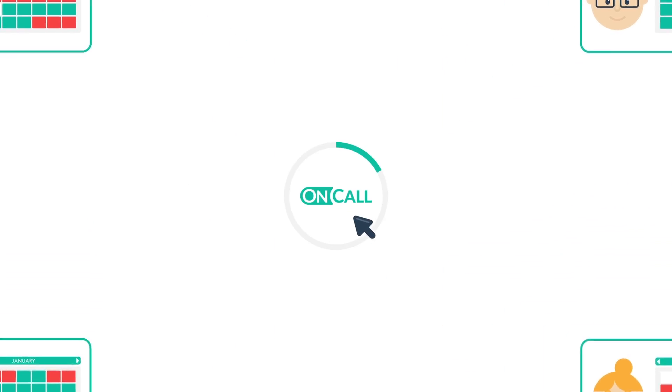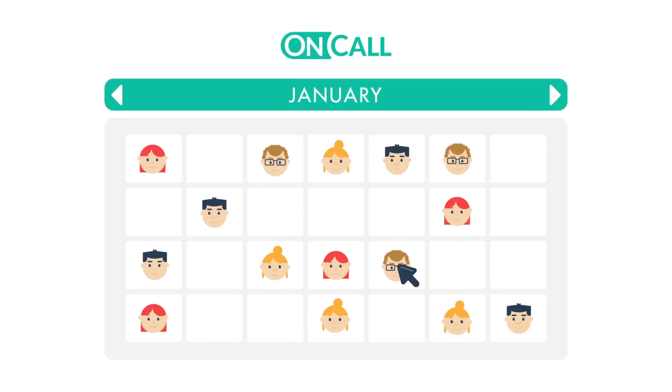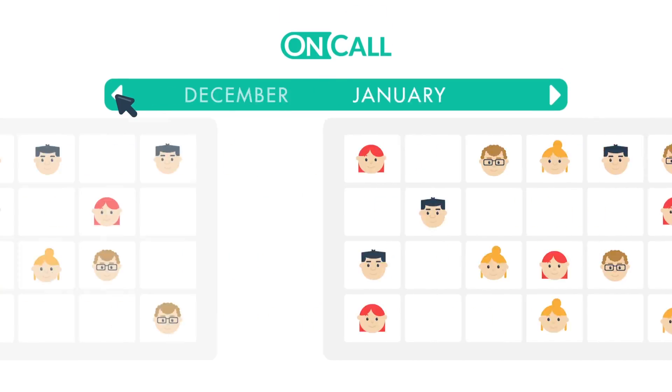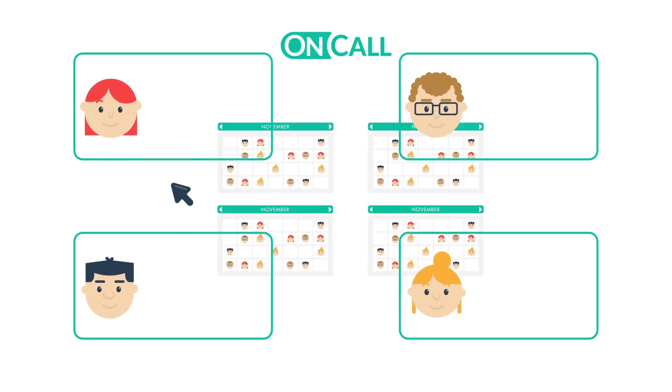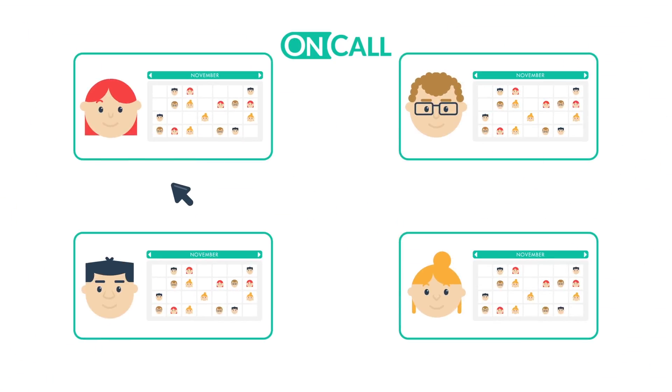Within seconds, On-Call generates a schedule that's fair — even looking at your team's history — and shares it with your team.